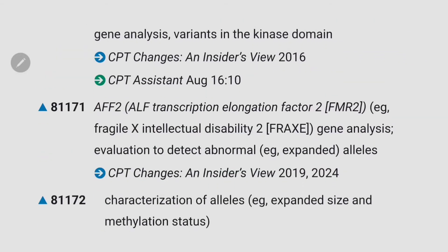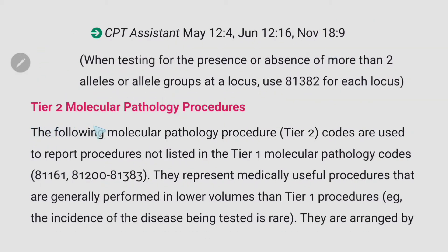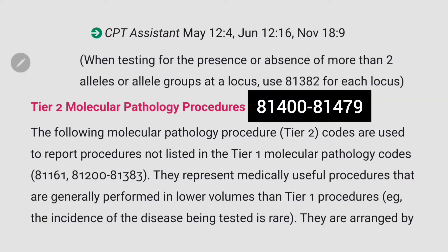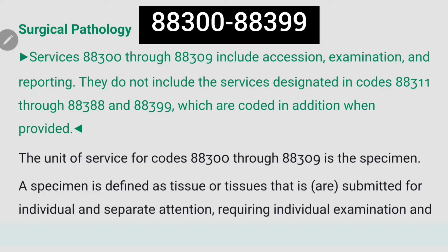There is also Tier 2 molecular pathology procedures. These codes are used to report procedures not listed in Tier 1 molecular pathology codes. The code range for Tier 2 molecular pathology procedures is 81400 to 81479. The next important section is surgical pathology, with code range 88300 to 88399.